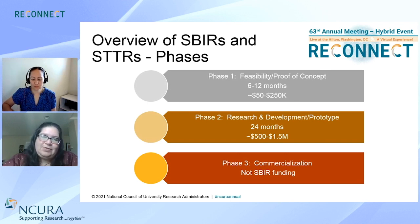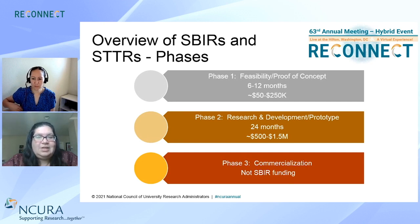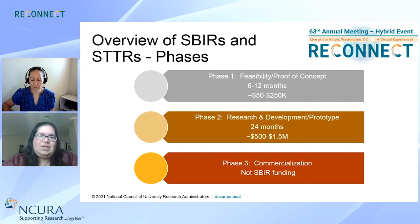Phase two: you apply for phase one, win that award, and then apply for phase two. It's the research and development or prototype-building phase, and involves considerably more money — up to $1.5 million over 24 months. Phase three is not federal funding; it's the commercialization phase, where you take what you've done in phases one and two and bring it out into the world. It's part of the process but not SBIR funding itself.